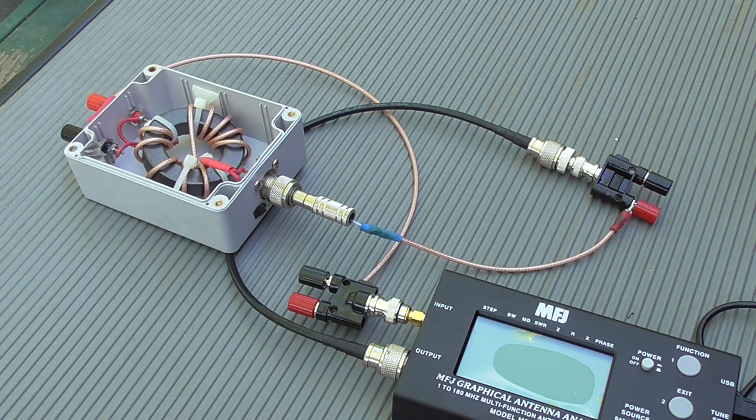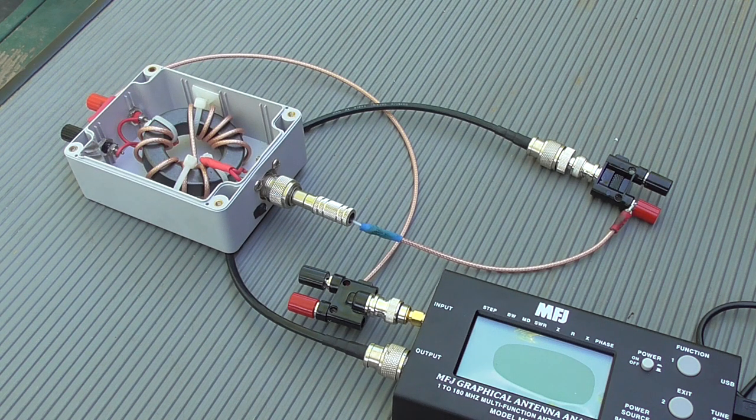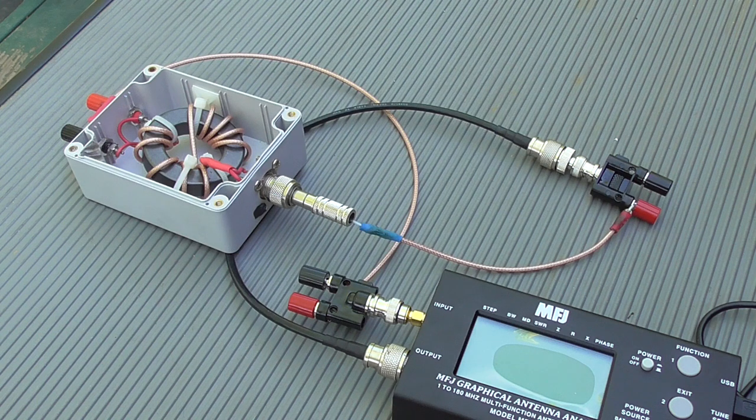In its simplest form, a single-port VNA can measure SWR, cable length, capacitance, resistance, phase angle, and other electrical attributes.